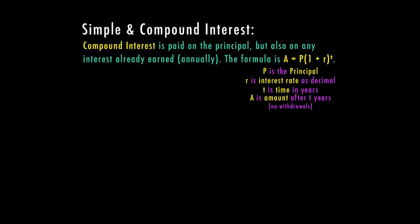P is still the principal, the amount that you start out with. R is the interest rate, which again is given as a percent and you have to change it to a decimal. T is the time in years, so if your time is not in years you're going to have to convert. And A is the amount that you have after however many years you have your money invested.